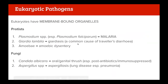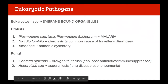Eukaryotic pathogens - here are some important ones. Plasmodium causes malaria, specifically Plasmodium falciparum which causes the most severe form. Giardia lamblia causes giardiasis, a common cause of traveller's diarrhea, and amoebas cause amoebic dysentery. With fungi, Candida albicans causes oral or genital thrush - that white buildup you can get in your mouth or genitals - usually post-antibiotics or in immunosuppressed individuals like HIV patients. Aspergillus causes aspergillosis, mainly lung diseases, especially dangerous as aspergillus pneumonia.